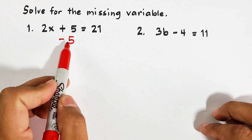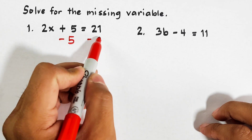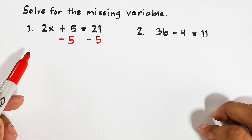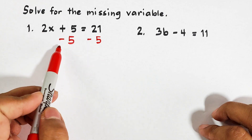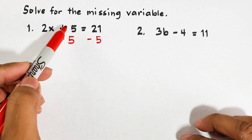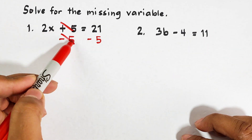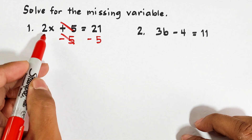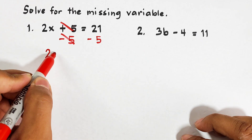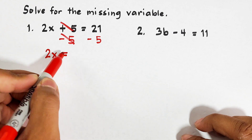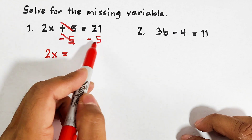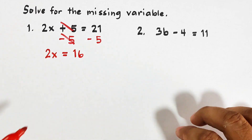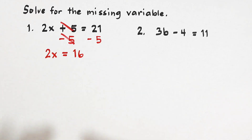since we subtracted 5 here, we also need to subtract 5 on the other side of the equation. So plus 5 minus 5 becomes 0 — we can simply eliminate that part. What remains on the left side is 2x, and on the other side we have 21 minus 5, which is equal to 16. We subtracted 5 on both sides of the equation.